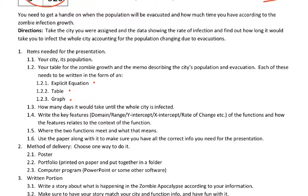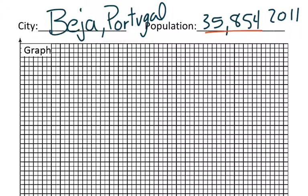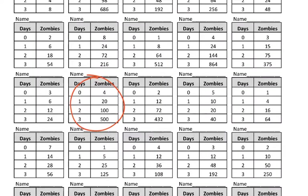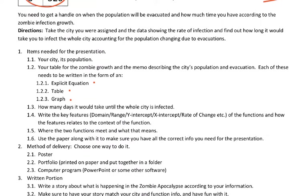So using that can kind of help guide what you need. So you need how many days it will take until the whole city is infected, and what that population is. The key features, those ones, and how they relate to the context of the function, this idea of the zombies and the evacuation. Now when you present it, you can just put it on poster board and present it that way. You can do it a portfolio style, printed paper, put it together. At the very least, just have this filled out to use. But you won't get as many points for presentation based off that one.